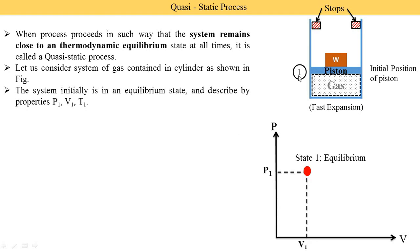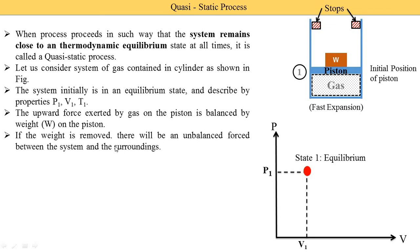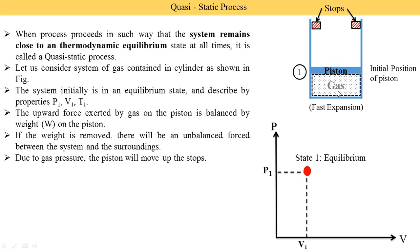The upward force exerted by the gas on the piston is balanced by the weight W on the piston. If the weight is removed, there will be an unbalanced force between the system and the surrounding. When we remove weight W, an unbalanced force is created — different pressures exist across the piston. The gas applies a certain force on the piston and due to this gas pressure, the piston will move up to the stop. This is the new position of the piston and the gas has expanded.